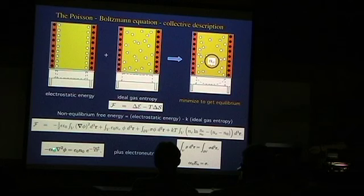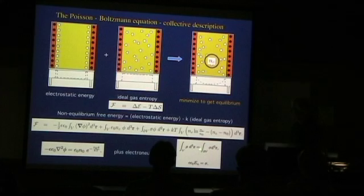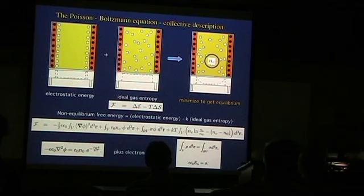If you minimize this, you get this equation for a single ionic species. This is called the Poisson-Boltzmann equation: the Poisson equation on the left-hand side and the Boltzmann distribution on the right-hand side. To the equation we must add boundary conditions: the total charge has to be zero — electroneutrality — since if it wouldn't be zero, the system would just explode and not be stable.